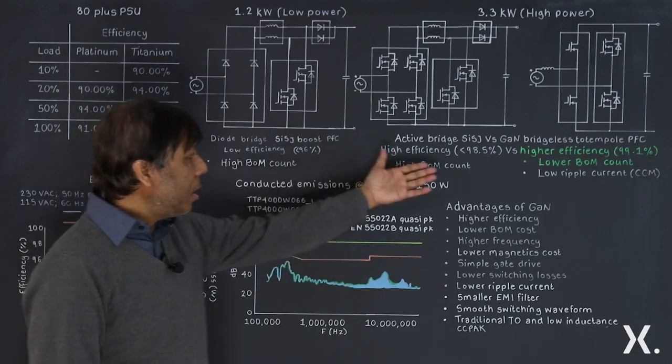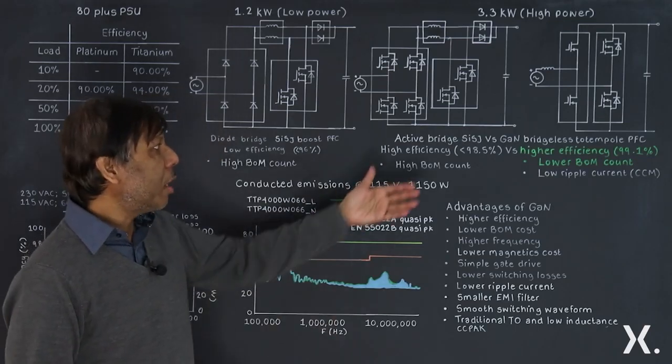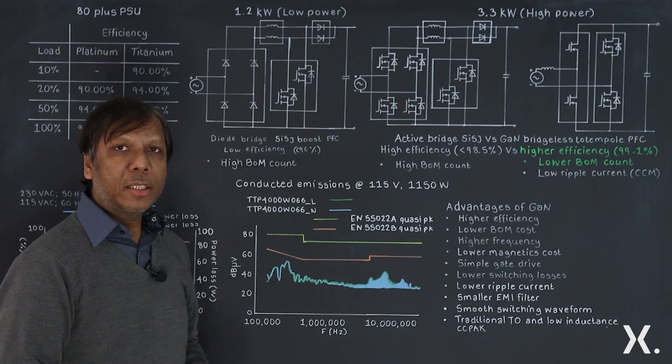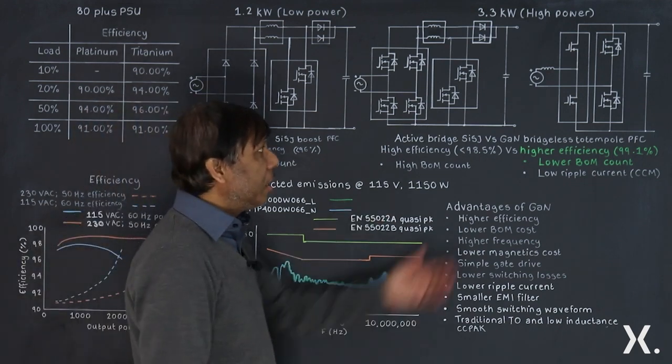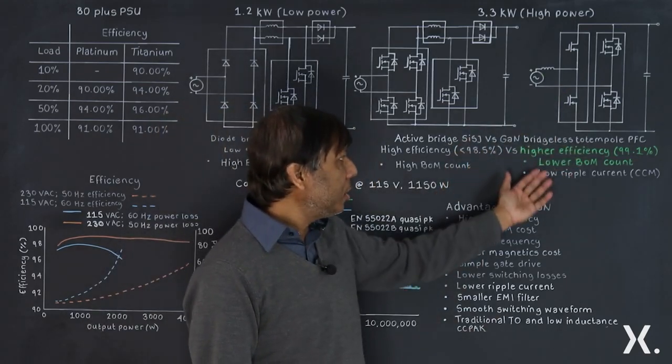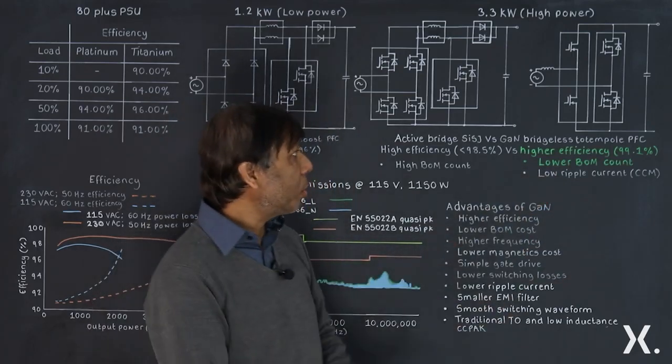You can achieve even higher efficiency, like 99.1 percent or above, using simple gallium nitride power GaN devices in the totem pole configuration. It gives you very simple structure, bridgeless, and it also gives higher efficiency, lower BOM cost, and lower ripple current for continuous current mode operation.